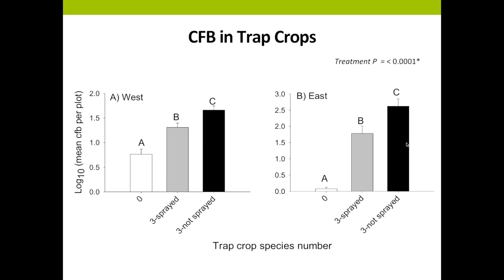Here we're looking at flea beetles D-vac'd out of our different trap crop treatments. The x-axis shows: zero (control, no trap crop), our diverse trap crop that was sprayed, and our diverse trap crop that was not sprayed. The y-axis is log10 mean flea beetles per plot. Panel A is our west site; Panel B is our east site. At our west site we always had lower flea beetle numbers — we collected 10 times the number of flea beetles at our east location that year. As expected, we collected significantly fewer flea beetles from control plots, and significantly fewer from the sprayed trap crop than the unsprayed one.